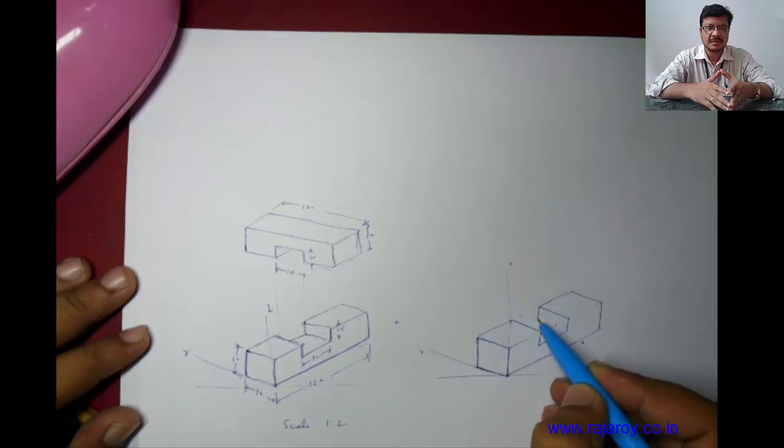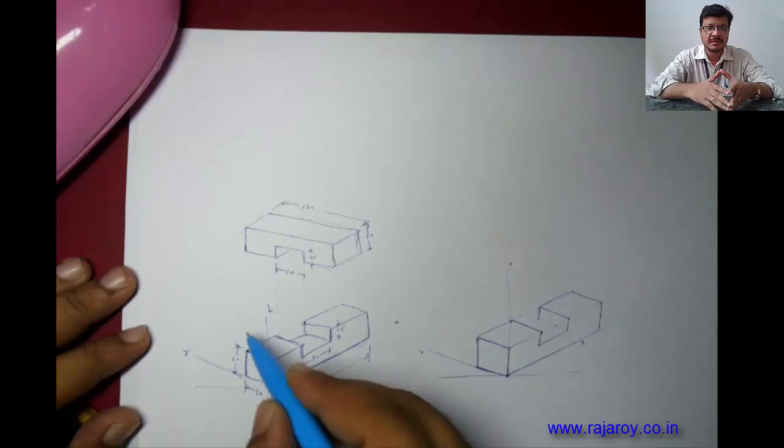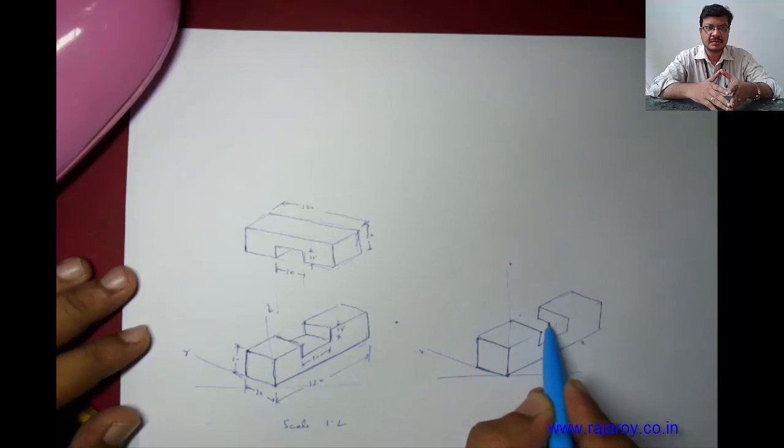This depth is 15. Take 15, that is parallel to z. Now this line will automatically become parallel to y-axis. Now from here draw a line parallel to x-axis until it touches this line, to complete this rectangular slot portion.